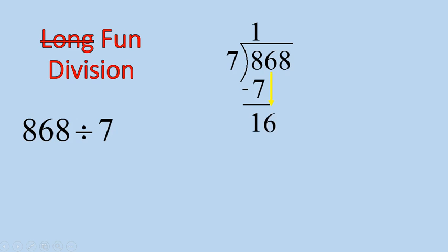All right, next step. We bring down our 6, and we start over. How many times does 7 go into 16? 7 goes into 16 two times. 2 times 7 gives us 14. And when we subtract that, we're left with 2. Again, the number we're left with should be less than that number there. So 7 does not go into 2 at all.